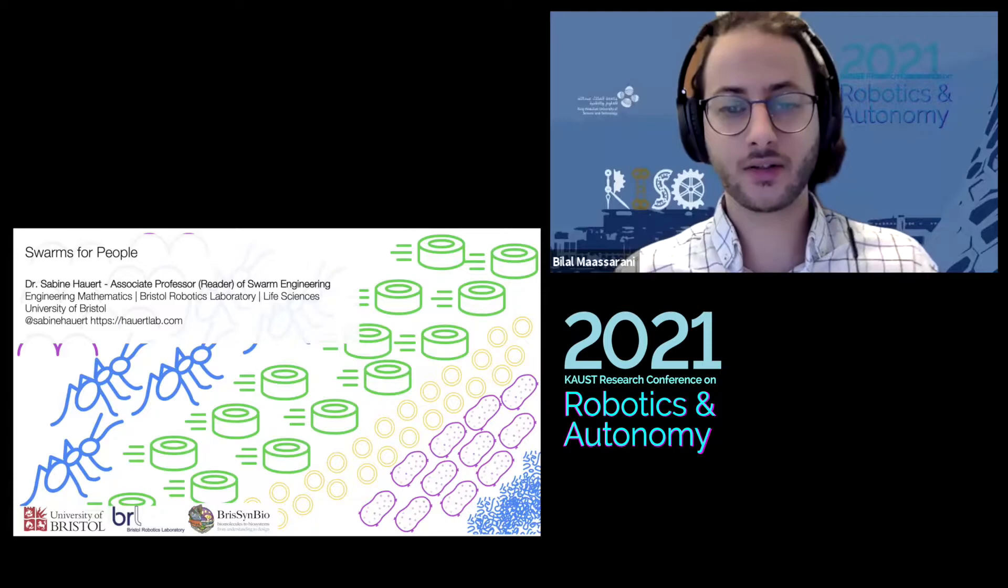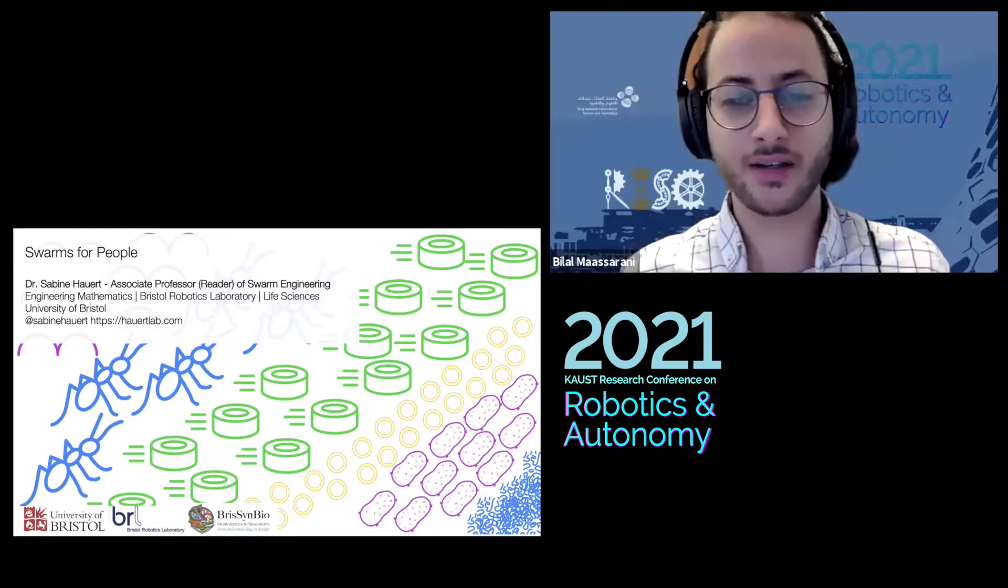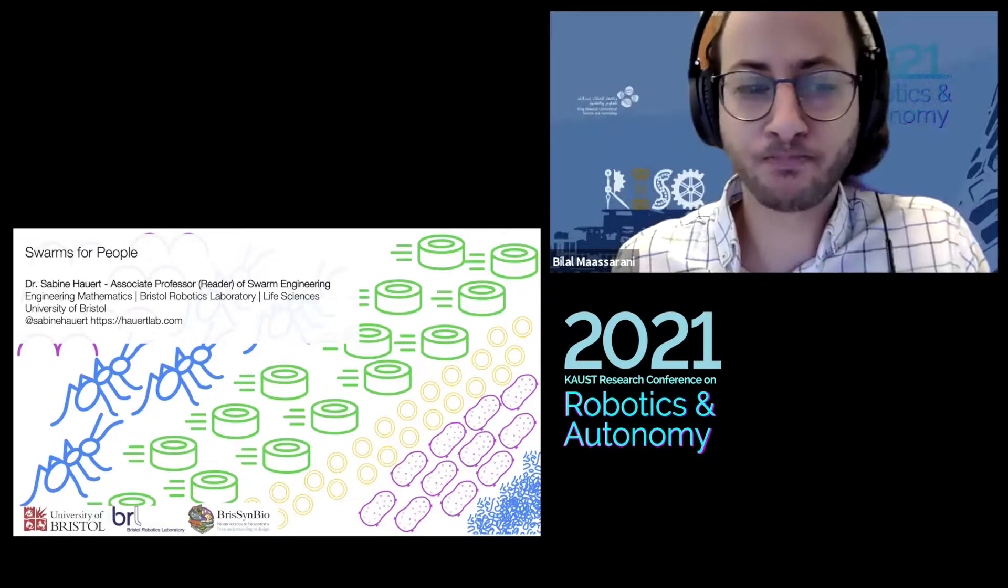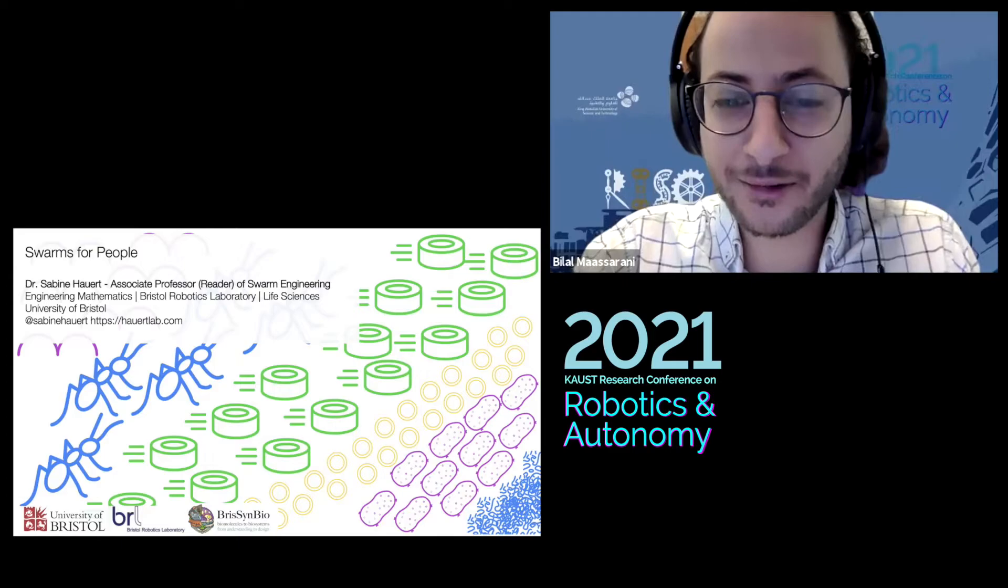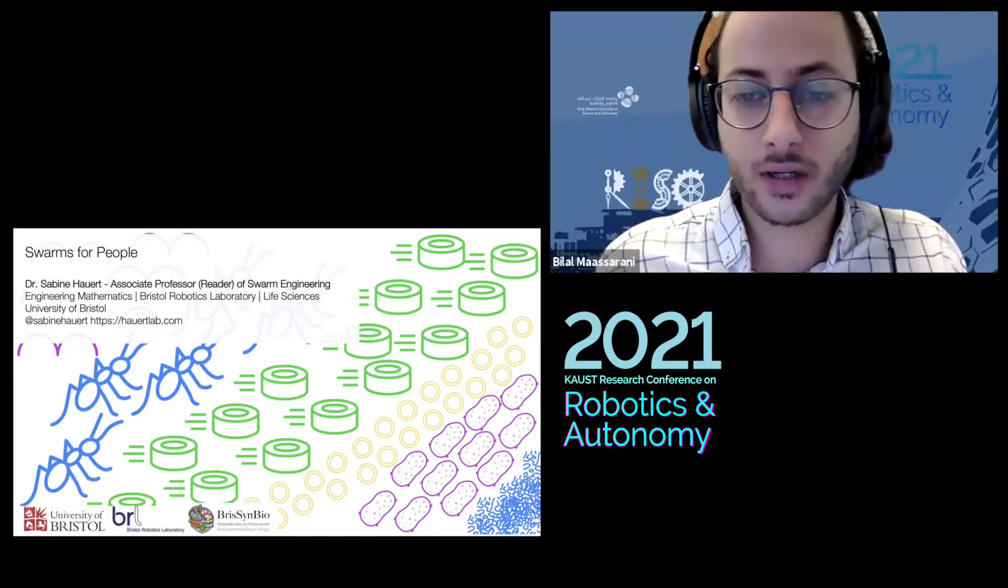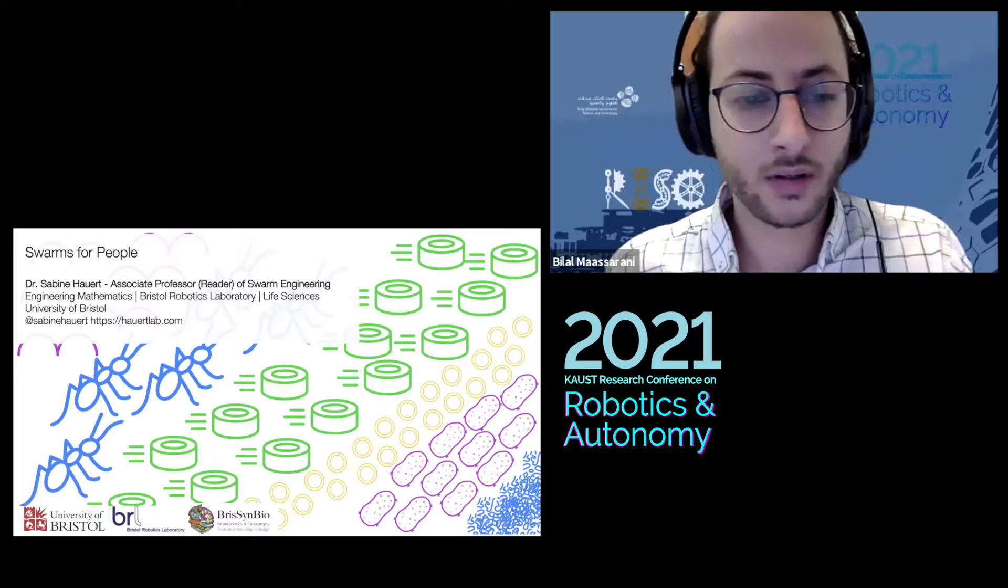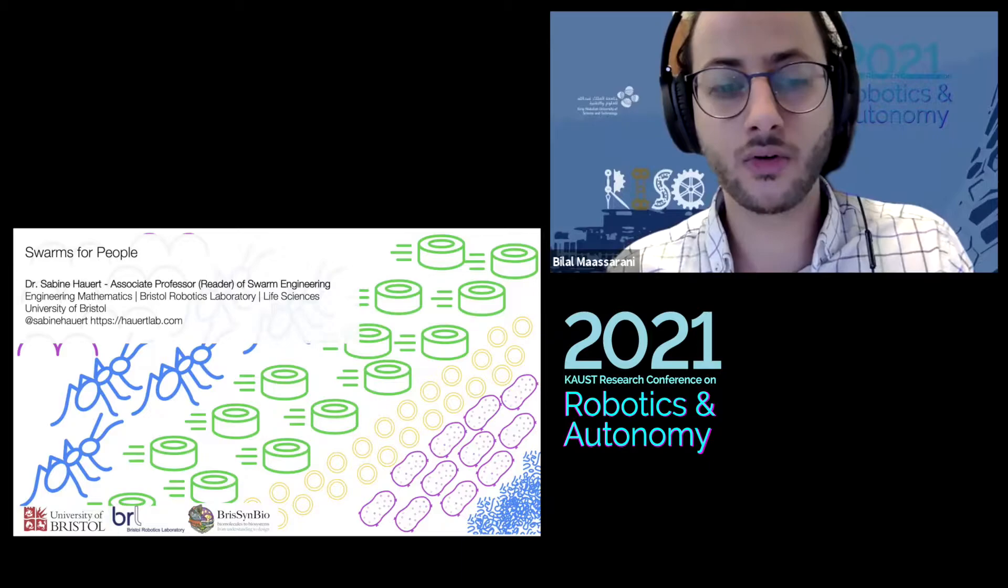I'm personally very excited about the next talk. Our speaker is a great communicator and a bit of a celebrity on social media and mainstream media such as BBC, CNN, The Guardian, and a bunch of other ones. She somehow managed to grab the domains aihub.org and robohub.org, which are non-profit websites to connect communities in the field. She worked in cancer research at MIT, received her PhD from EPFL, and is currently a professor of swarm engineering at the University of Bristol. Professor Sabine Hauert will be talking about swarms for people. The stage is yours, Professor.